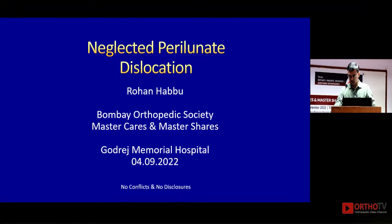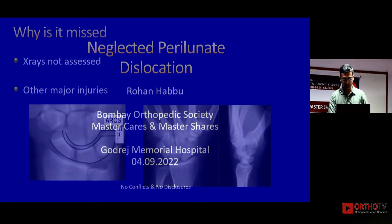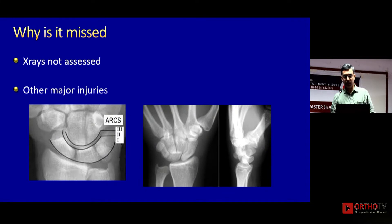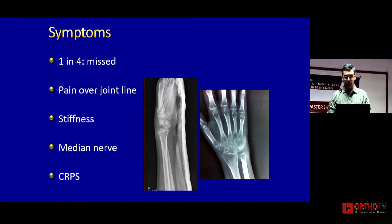I'll speak primarily on neglected perilunate dislocation — it's missed and now what to do. It's commonly missed because X-rays are not assessed well and there are other major injuries, so the wrist gets secondary treatment. Once the patient is out of all medical and surgical issues at three or four weeks, the wrist is assessed and you have something like this. Almost one in four perilunates have been missed — I think I've missed one or two.